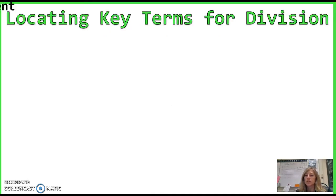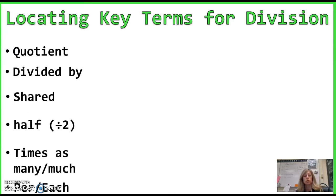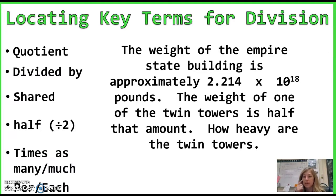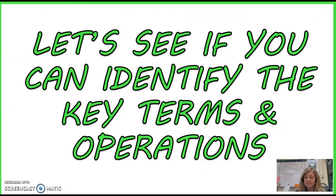One more division problem. Key terms include quotient, divided by, shared, and half. The weight of the Empire State Building is approximately 2.214 times 10 to the 18th pounds. The weight of one of the Twin Towers is half that amount. How heavy are the Twin Towers? Remember, to take half of something means we can divide by two — highlight half means divide. Here is our answer; hopefully you would have paused it first. Now there are some problems for you to try in the quiz online, so give that a shot.